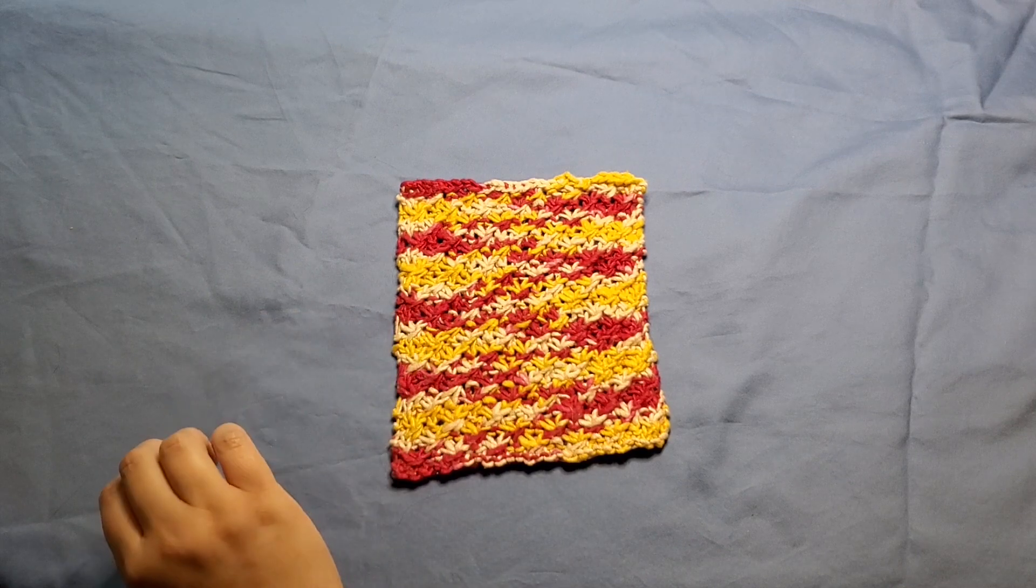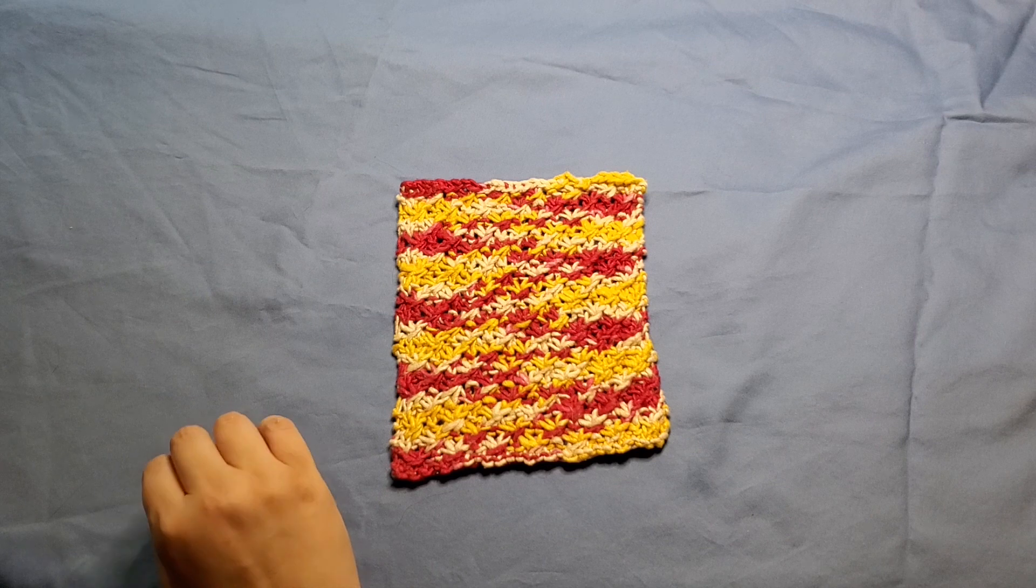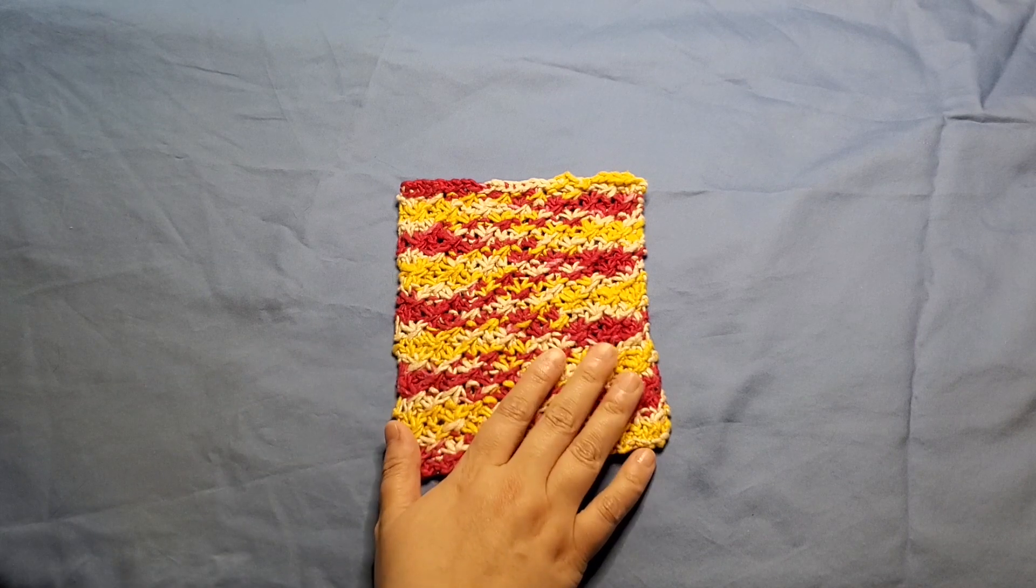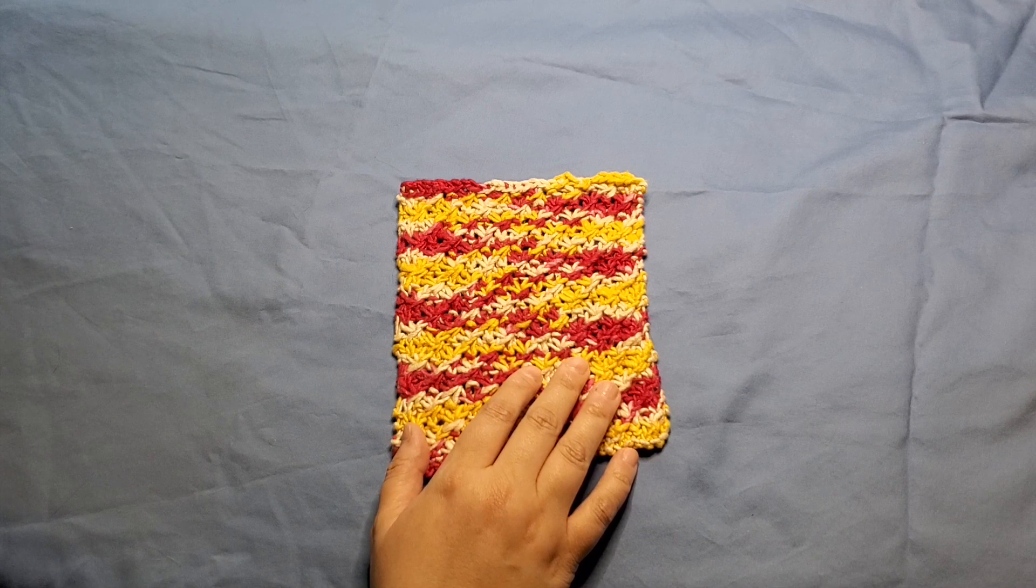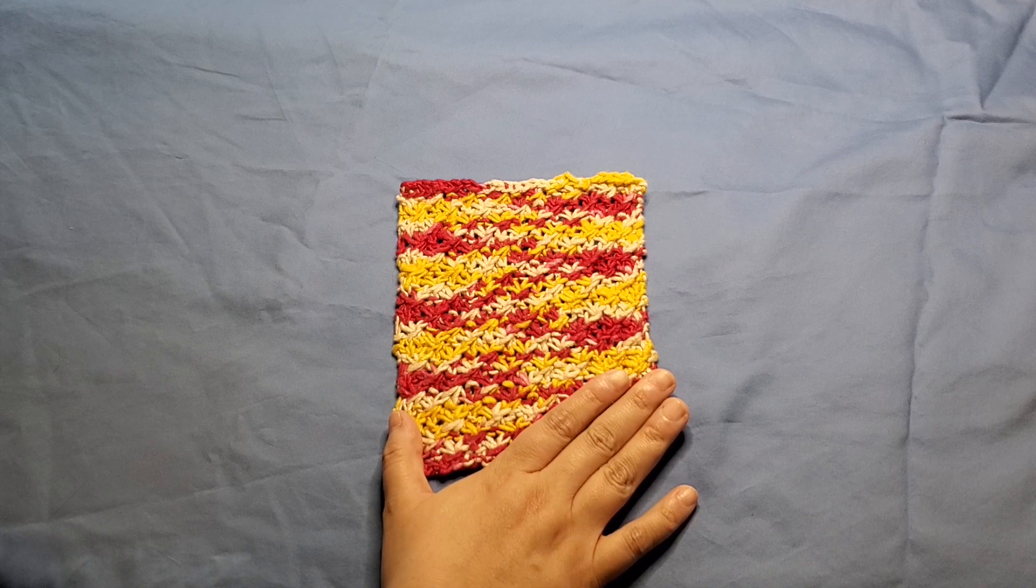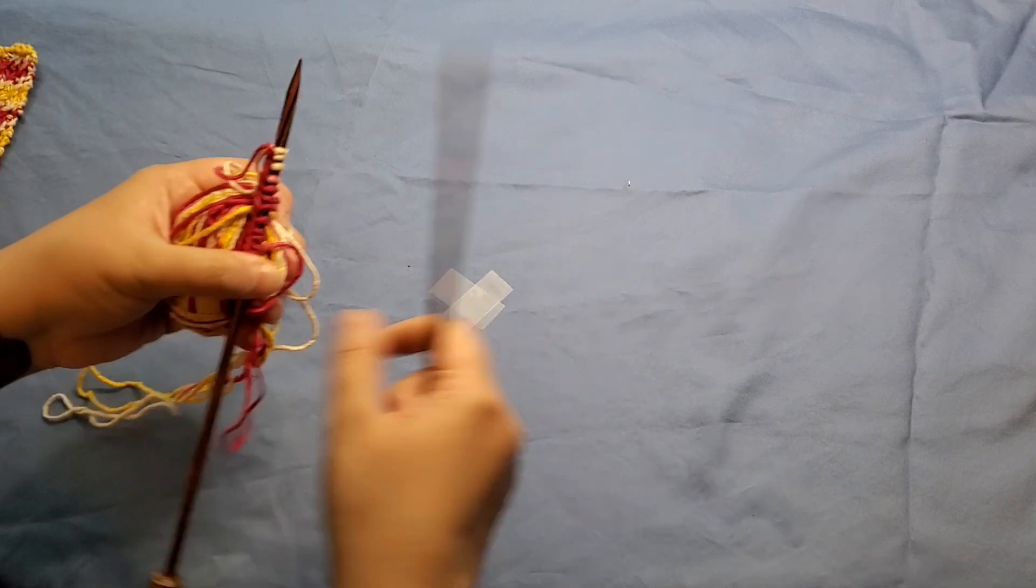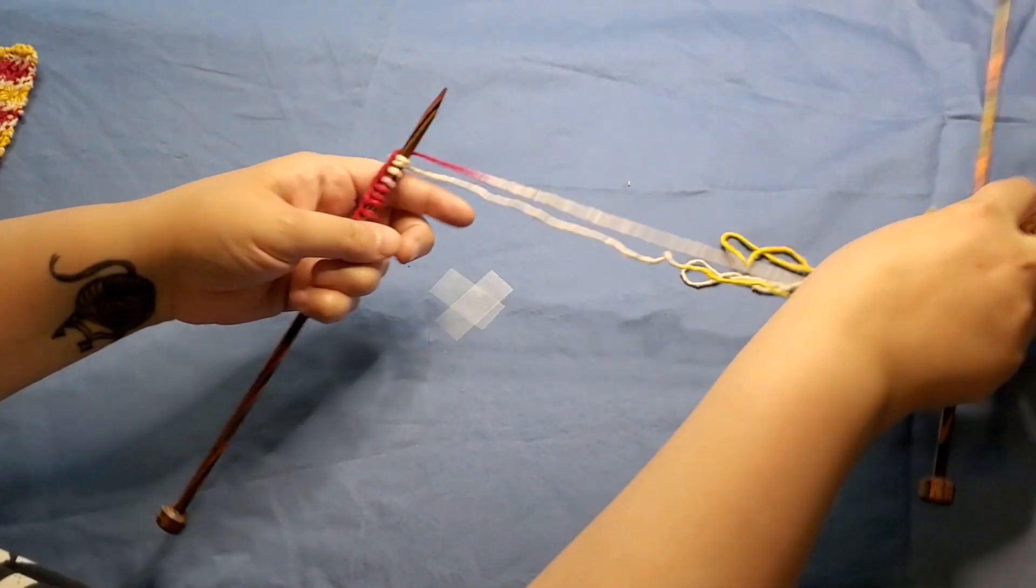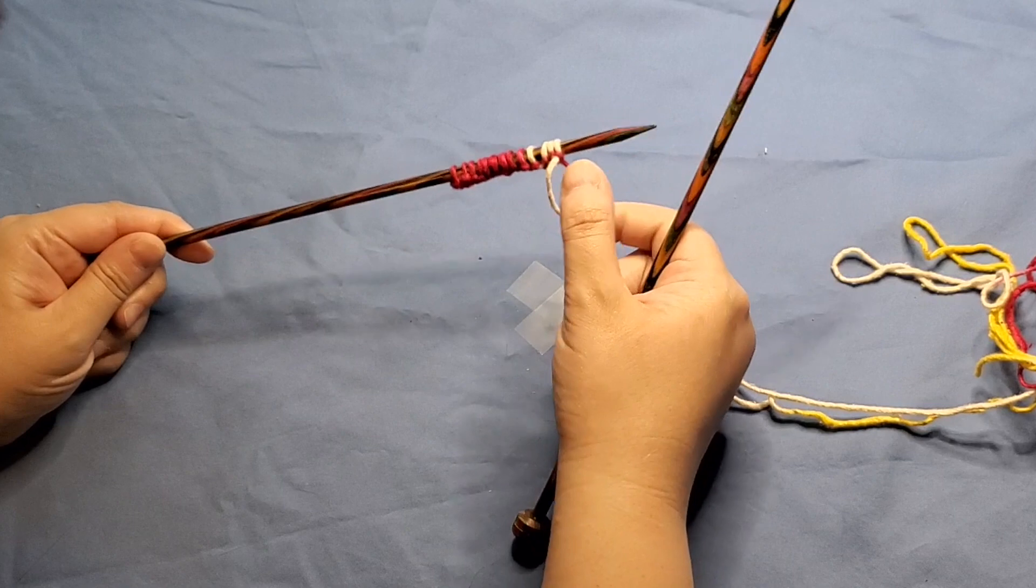This is what it looks like. And it is done in a multiple of four plus one, which means for this one, I cast on 29 stitches, which is multiple of four. It goes 28 plus one is 29. And that's to get this six inch square. For our sample piece that we're going to work on today, I cast on 13 stitches. So you get that multiple again, a four plus one.